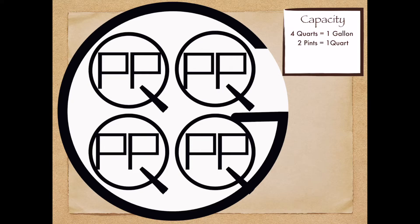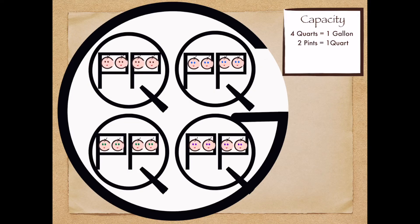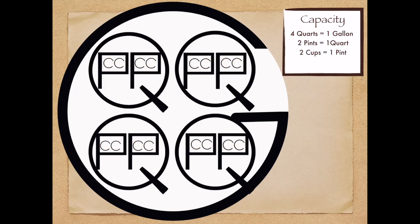How many children did each prince and princess have? You got it! Two! The C in children stands for cups. And there are two cups in each pint.